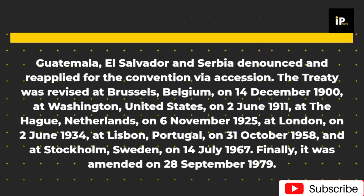The treaty was revised at Brussels, Belgium, on December 14, 1900; at Washington, United States, on June 2, 1911; at The Hague, Netherlands, on November 6, 1925; at London, on June 2, 1934; at Lisbon, Portugal, on October 31, 1958; and at Stockholm, Sweden, on July 14, 1935. Finally, it was amended on September 28, 1979.